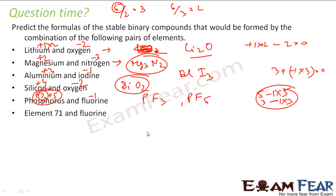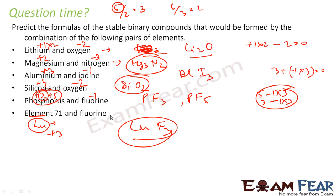For element 71, which is lutetium, the oxidation state is plus 3. If I take 1 lutetium, I need 3 fluorines to compensate, since fluorine is minus 1. The formula is LuF₃. Just by the oxidation state, I can find the formula.